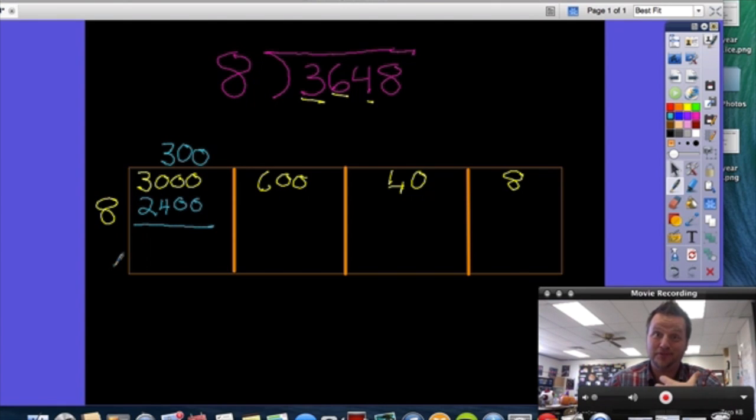What I have to do now is going to be really familiar, especially if you're a long division fan. I'm going to take 3,000, and I'm going to subtract that 2,400, and I'm going to be left with a difference of 600.